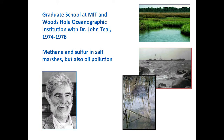Bob went to the joint MIT and Woods Hole Oceanographic Institution PhD program, working with John Teal primarily on salt marsh ecology. He looked at sulfur cycling, which led to acid rain research, and natural methane fluxes — a topic that has fascinated him ever since. He wants to spend time today explaining why methane is such an undervalued part of global change.